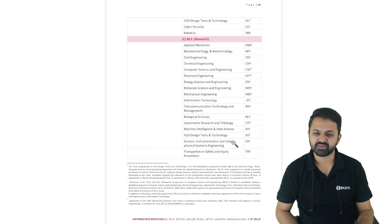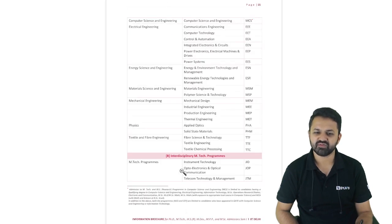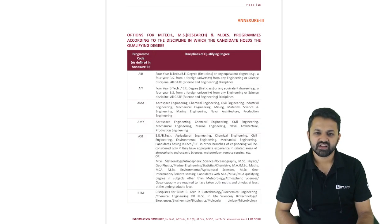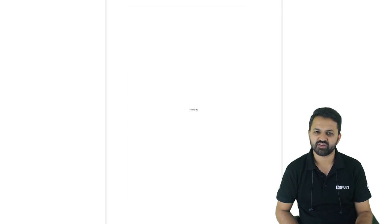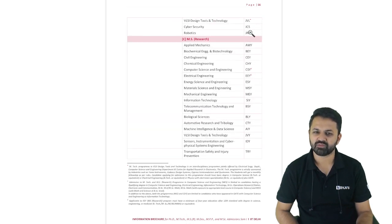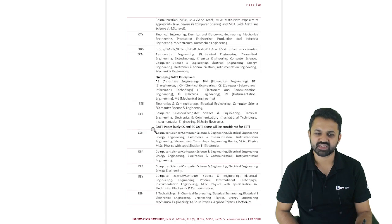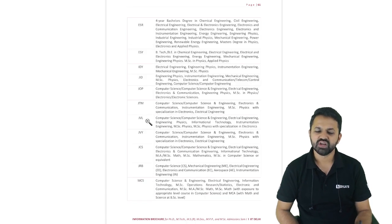There are also interdisciplinary branches, including VDTT (VLSI Design Tools and Technology), which is very important for electronics students and has very good placements. Other important interdisciplinary programs include M.Tech in Instrumentation Technology and Telecommunications (JTMS). A table is provided with program codes and disciplines. For example, for program code JVL, you can check the minimum qualification — Computer Science students, Electrical Engineering students, and Instrumentation students can all apply in this particular branch.